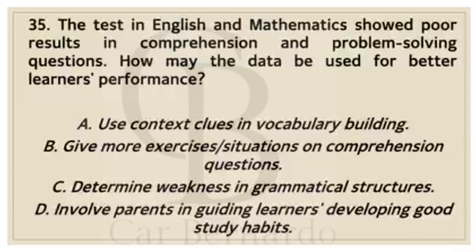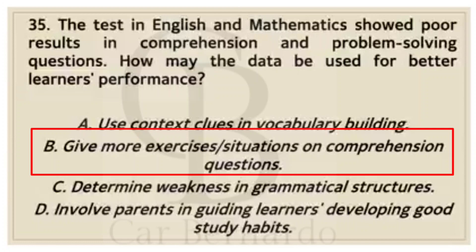Number thirty-five: The test in English and mathematics showed poor results in comprehension and problem-solving questions. How may the data be used for better learners' performance? Letter A: Use context clues in vocabulary building. Letter B: Give more exercises, situations, and comprehension questions. Letter C: Determine weakness in grammatical structures. Letter D: Involve parents in guiding learners in developing good study habits. Answer: Letter B, Give more exercises, situations, and comprehension questions.